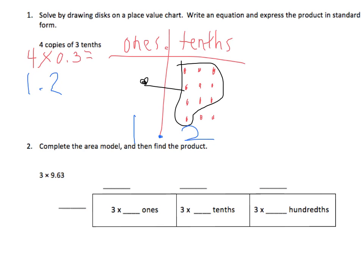Number 2 asks us to complete the area model and then find the product. It's important to know how they're breaking down the area model. The first number is always going to go on the outside of the area model. This is the area model, the rectangle. It's breaking down the other number into partial products, into pieces.